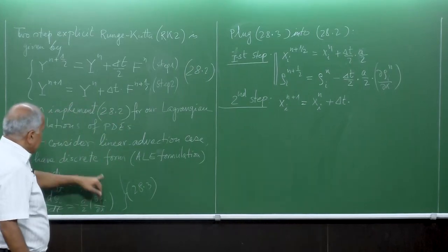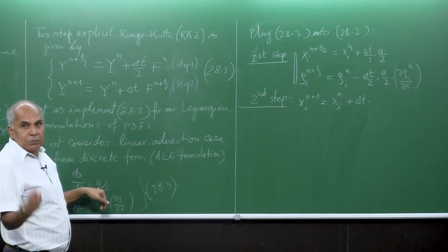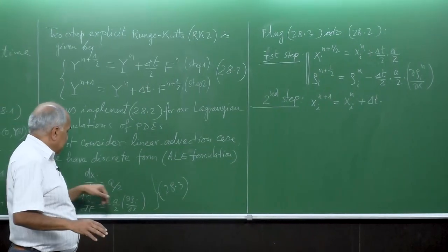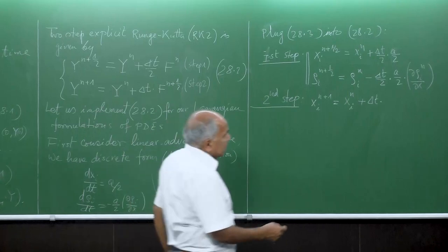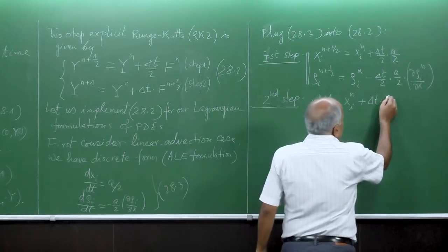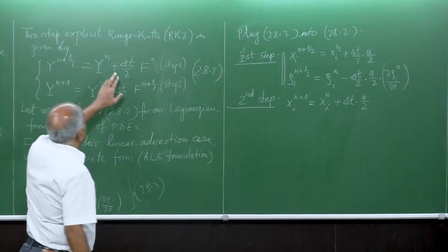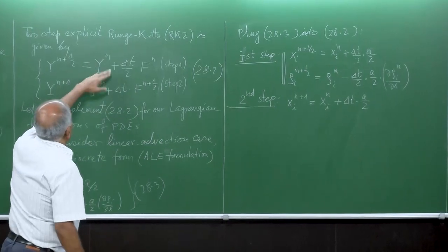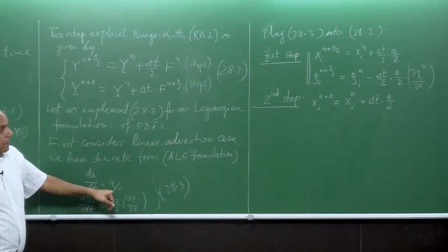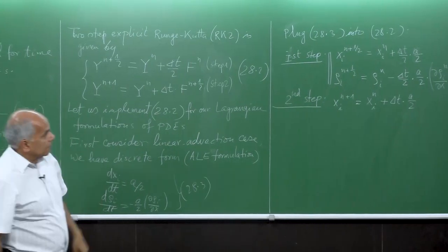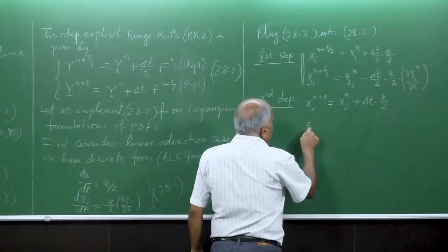Because a is constant, whether it is n, n+1, or n+2, for the first equation it doesn't change. So it is just a/2. This y_n is constant for the first equation, but it is not the case in the second equation.